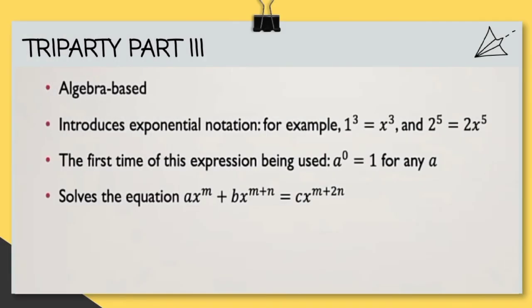In Tripartite Part 3, he really focused on algebra. He introduces exponential notation, so for example, 1 to the 3rd equals x to the 3rd, and 2 fifth equals 2x to the 5th. He wasn't like evaluating this exponential, but he was simply just meaning those mean like linear equations, since he was doing algebra. You can see the numbers were the coefficient to the x, and then the exponent is actually what applied to the x and not the number.